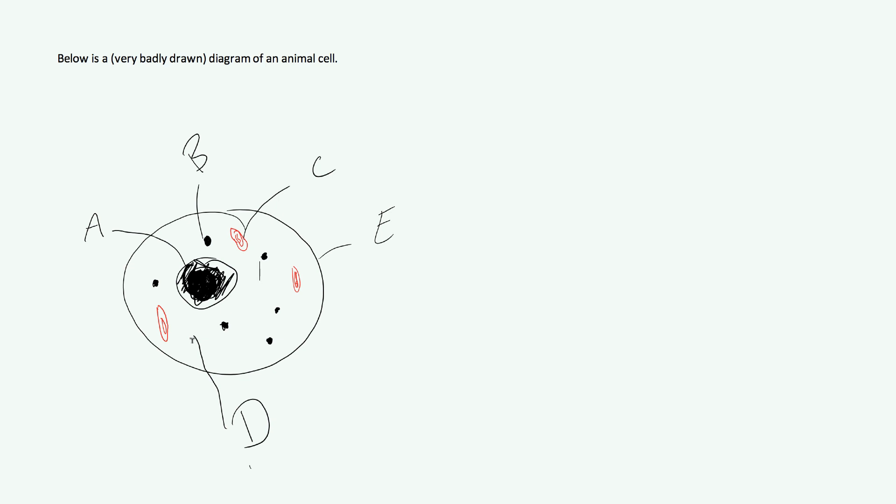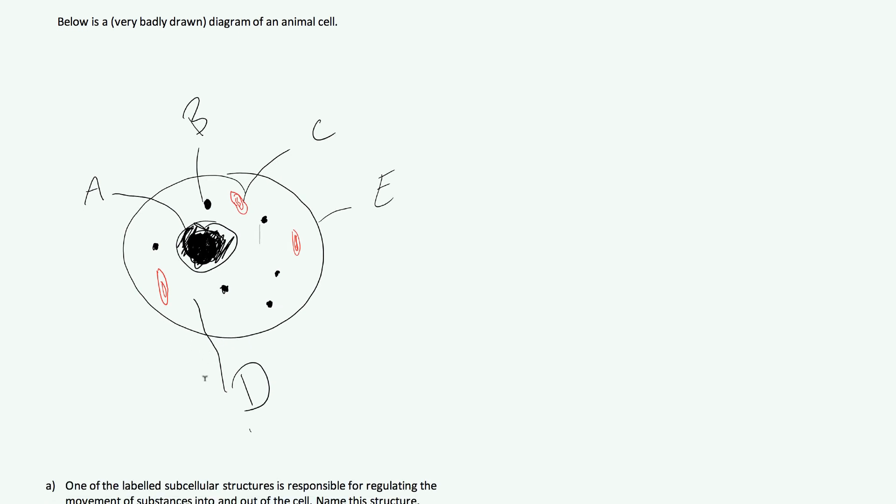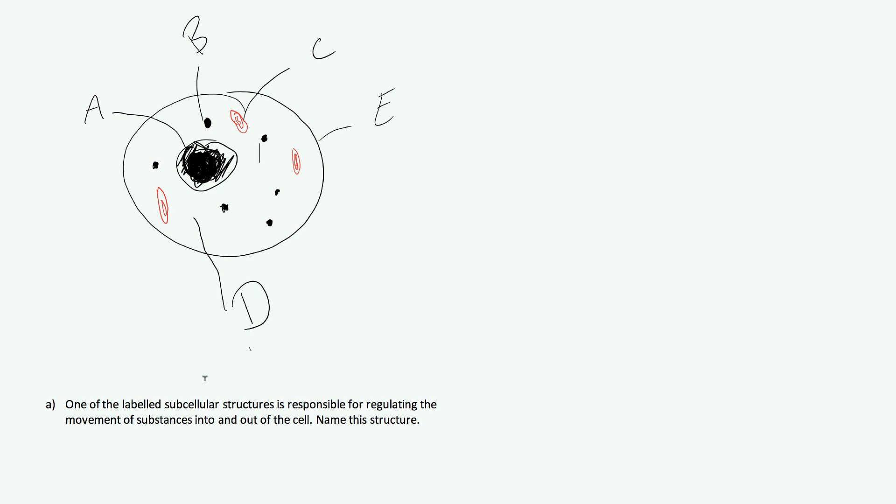Moving down here we have part A of our question. It says that one of the labeled subcellular structures is responsible for regulating the movement of substances into and out of the cell. Name this structure. Notice it doesn't say write the letter for this structure, it says name it.